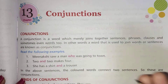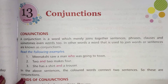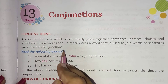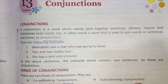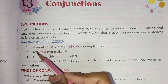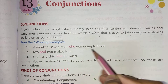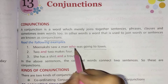Let's understand with examples. 'Menakshi saw a man who was going to town.' Here, 'who' is a conjunction — it joins the two parts of the sentence together.